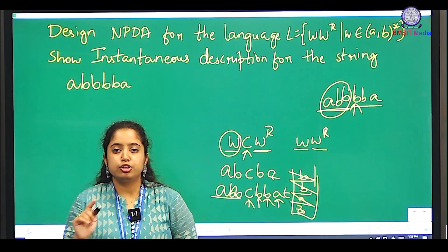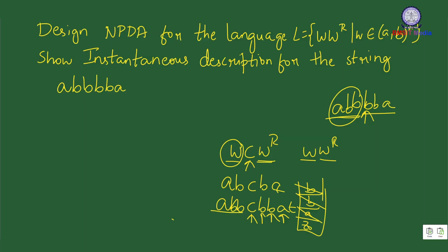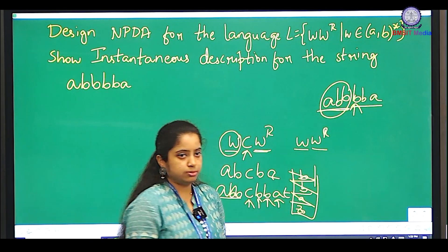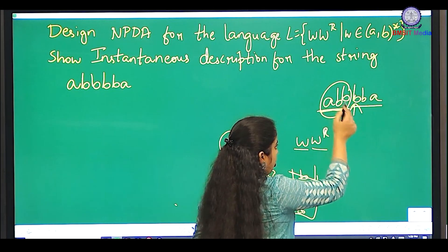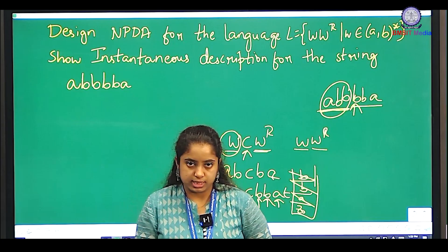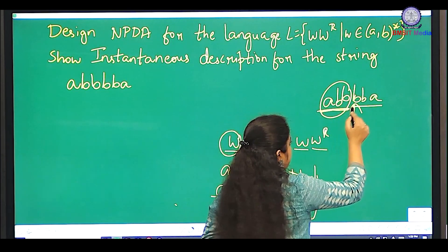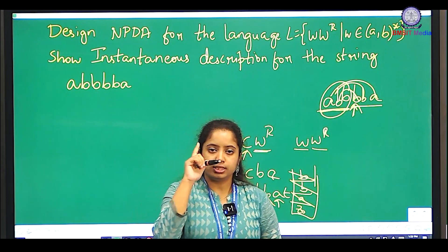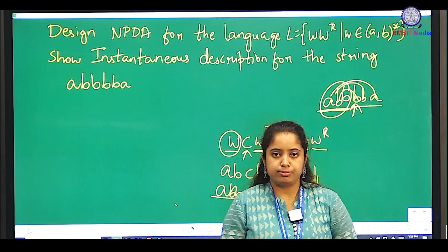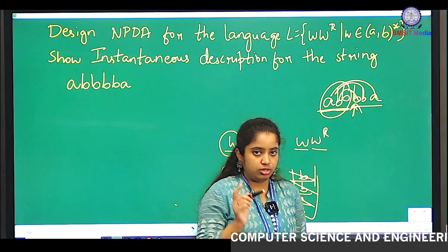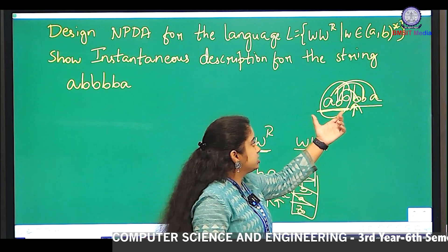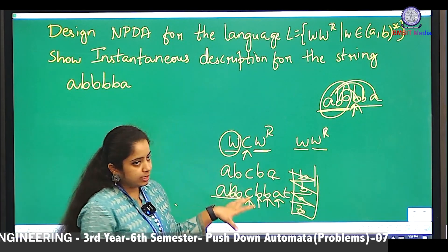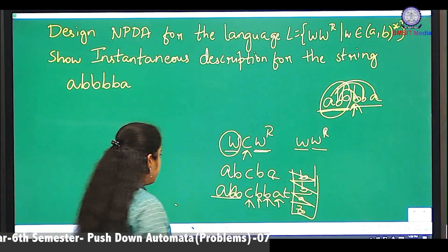You can design an NPDA — non-deterministic pushdown automata. NPDA is a machine that is not practically possible. What you do is accept all a's and b's by pushing, and then for the reverse part you start popping. You stay in the same state for both push and pop. As a human, you understand when w is completed and when w^r starts, but the machine will not understand — that is why it is not practically possible.